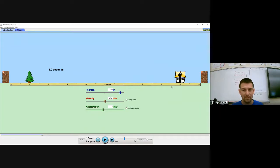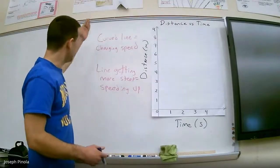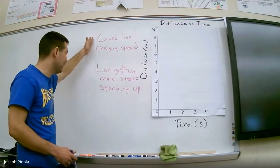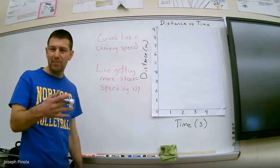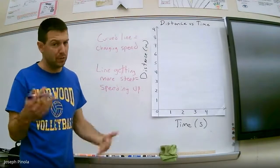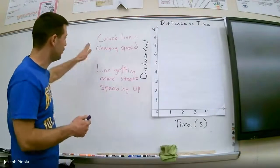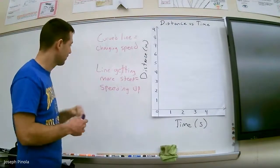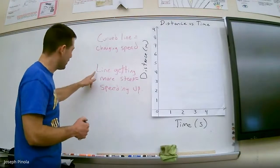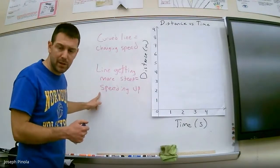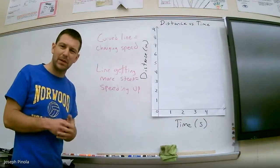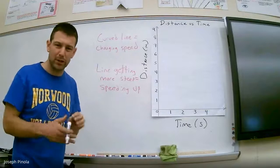He only covered half a meter during the last second of his movement. That makes sense — he's slowing down. Now let's go to our distance versus time graph and see what it looks like when an object is slowing down. Remember, if we have a curved line on a distance versus time graph, then the object is changing its speed. And remember from before, when the line was getting more steep, that means the man is speeding up. So let's take a look at what it would look like when he slows down.